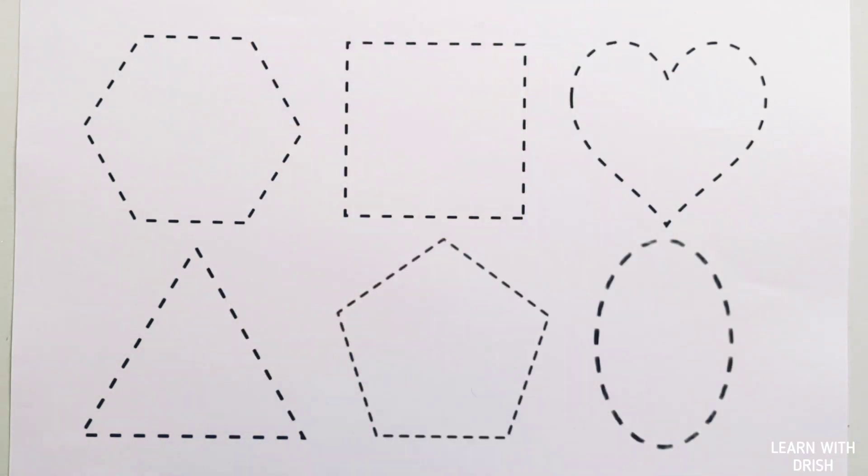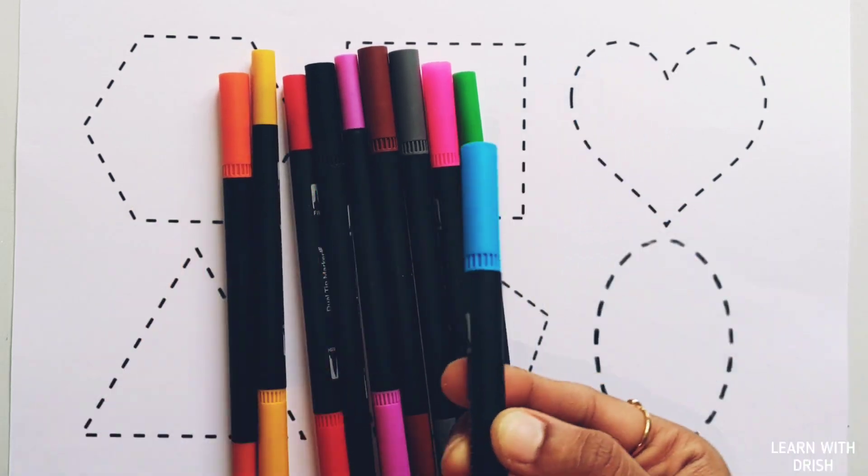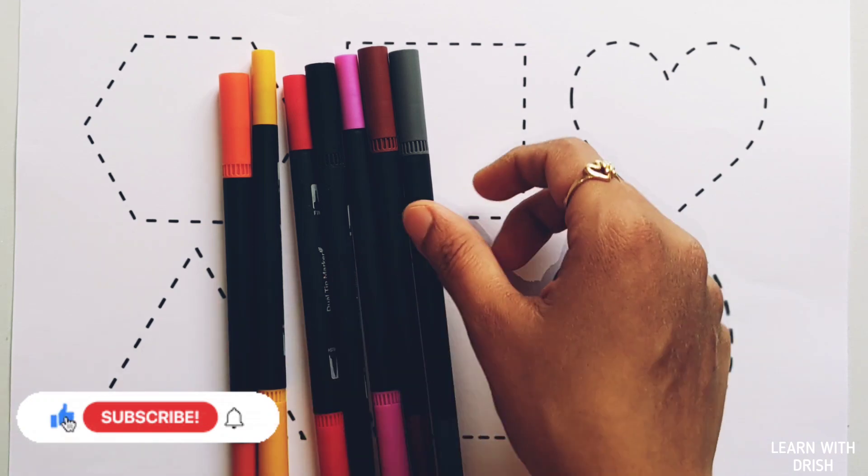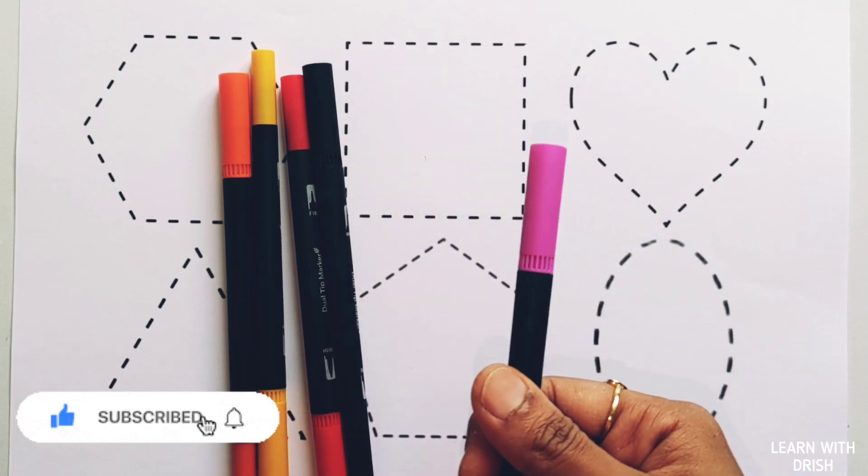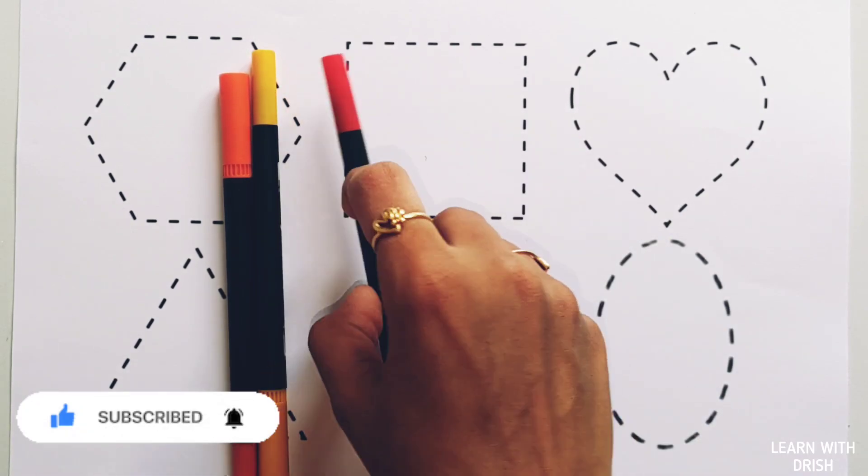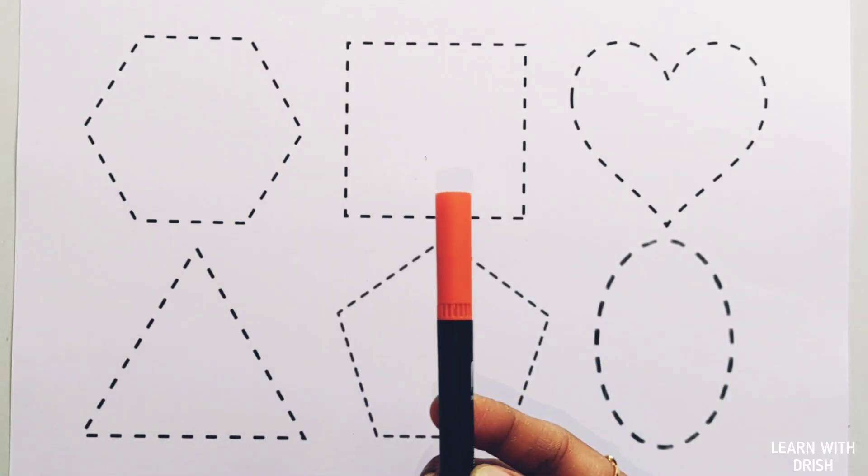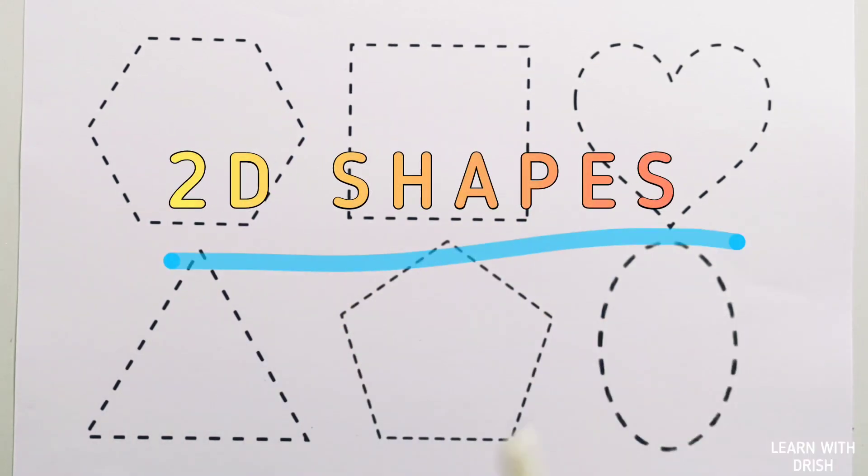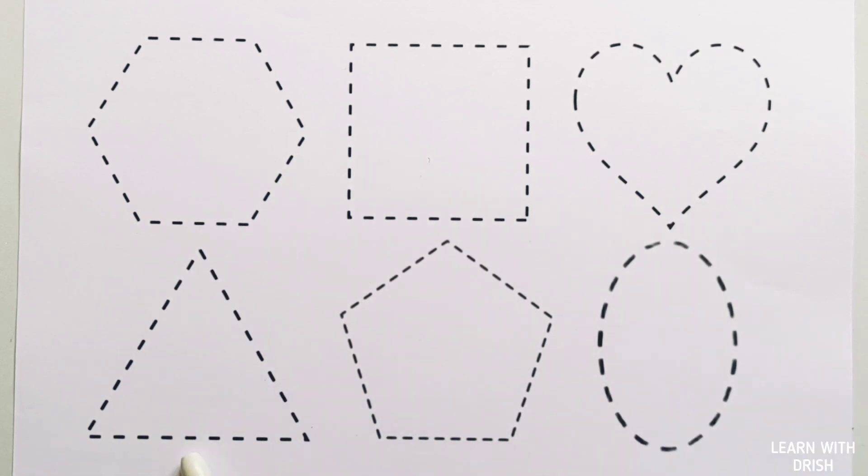Hello, let's learn some colors: blue color, green color, pink color, gray color, brown color, purple color, black color, red color, yellow color, orange color. Let's learn some shapes: hexagon, square, heart, triangle, pentagon, oval.